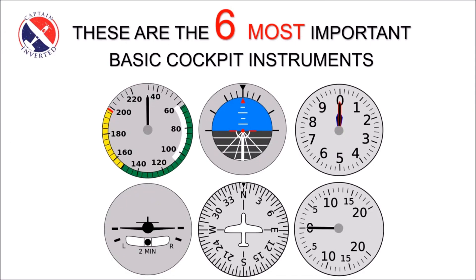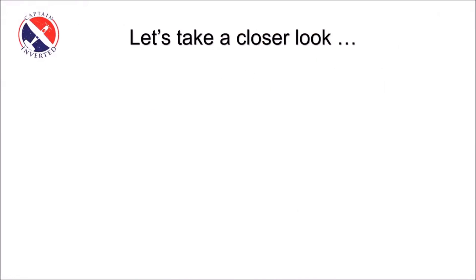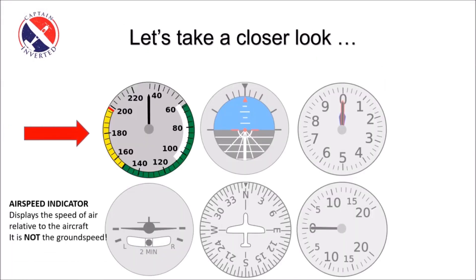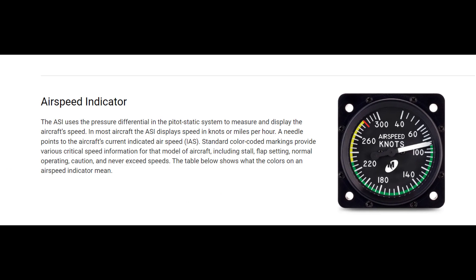Airspeed Indicator. The airspeed indicator displays the speed of air relative to the aircraft. It uses the pressure differential in the pitot-static system to measure and display the aircraft's speed.